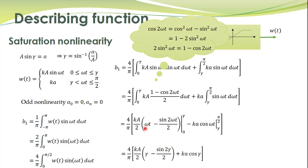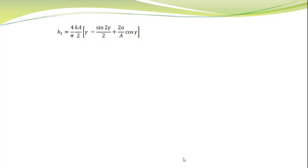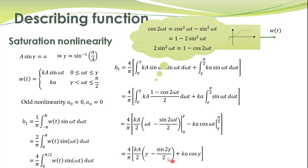We substitute the lower and upper limits. Integral of sin(ωt) equals −cos(ωt) and we substitute the limits of integration. Ka/2 and ωt evaluated at γ gives sin(2γ)/2. When we substitute the lower limit, these terms become 0 and sin(0) is also 0. For the second part, substituting the upper limit gives 0, and substituting the lower limit gives cos(γ), where the negative sign is cancelled out. So we have this expression, which can be further rearranged to write it in a simplified format.